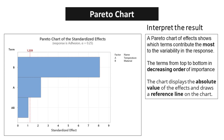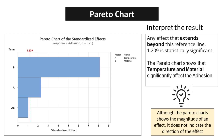A Pareto chart of effects shows which terms contribute the most to the variability in the response, listed from top to bottom in decreasing order of importance. The chart displays the absolute value of the effects, ensuring that the magnitude of the impact is clearly conveyed regardless of whether the effect is positive or negative. Any effect that extends beyond the reference line of 1.209 is statistically significant. The Pareto chart shows that temperature and material significantly affect the adhesion.